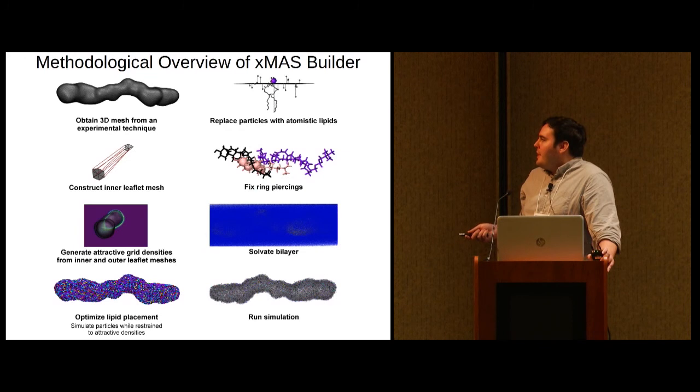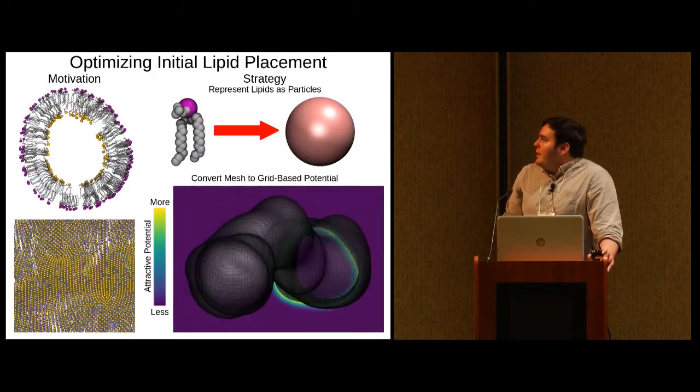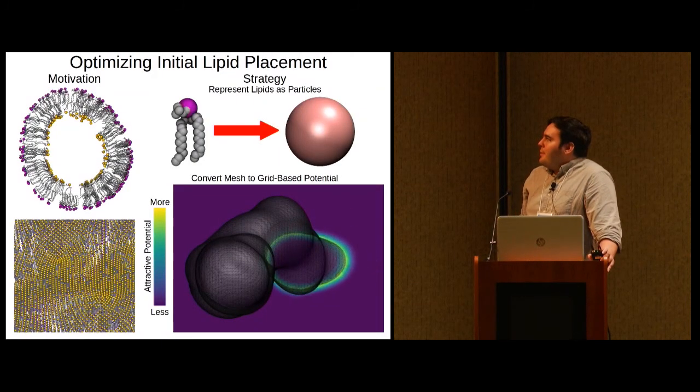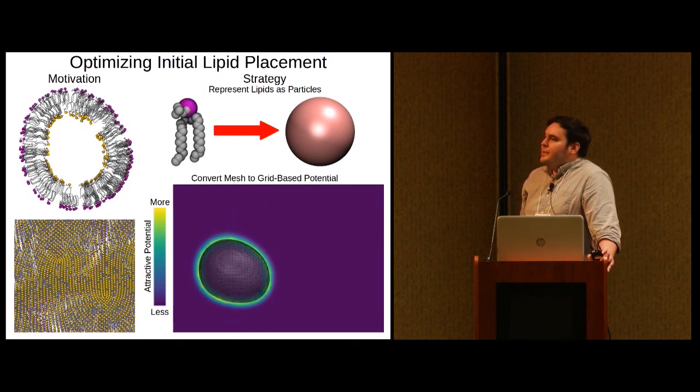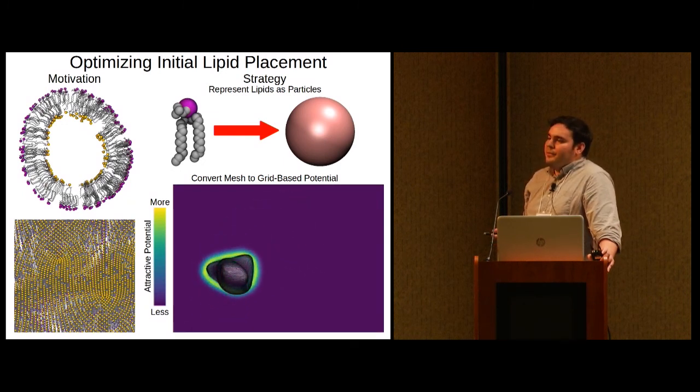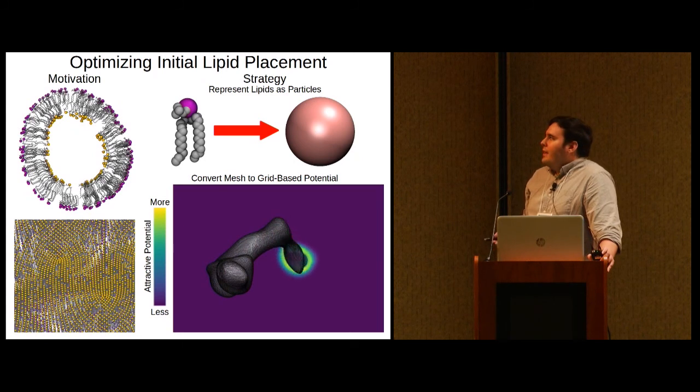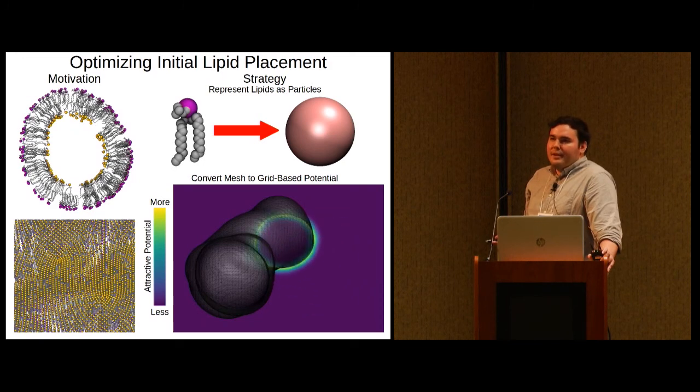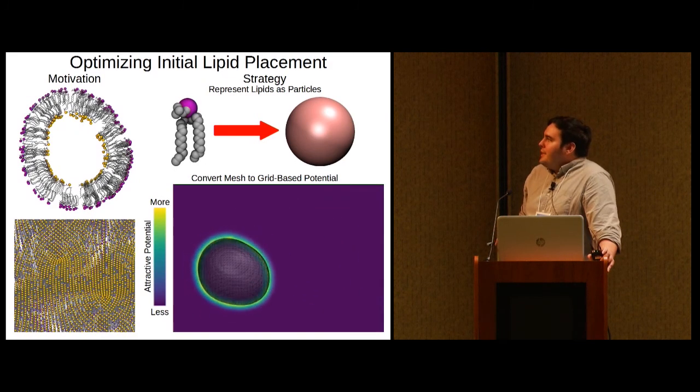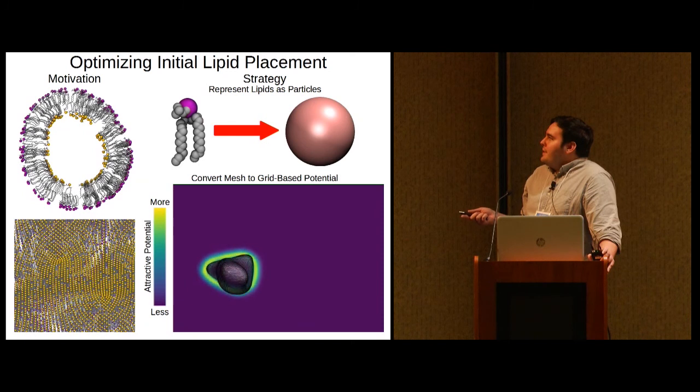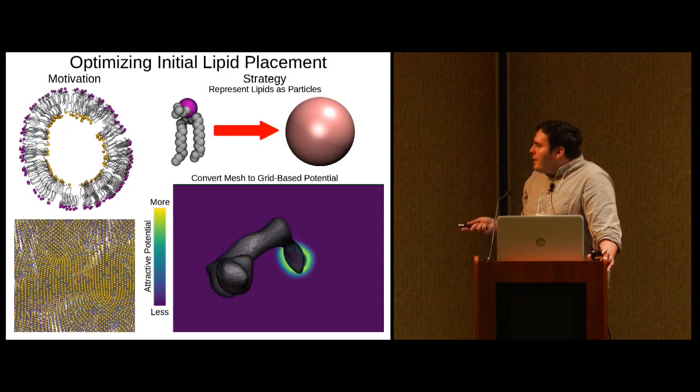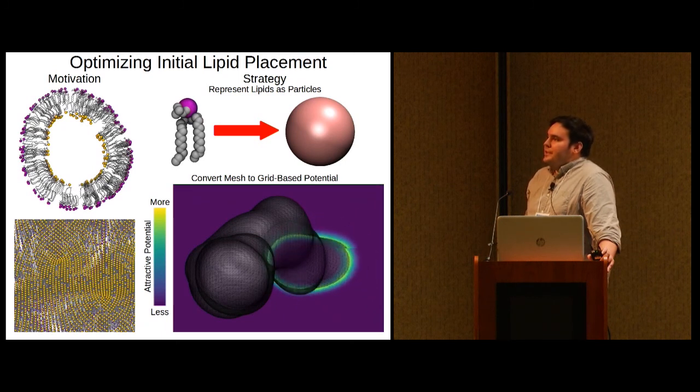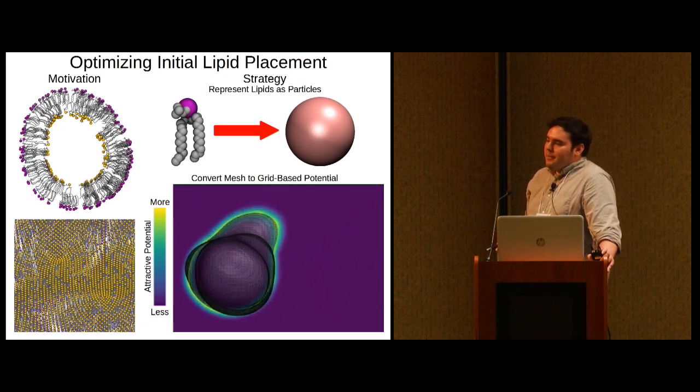So the first step I'll be talking about is optimization of lipid placement. In that preliminary model of the Terasaki ramp, lipids were placed using the vertices of the inner and outer leaflet meshes, which is the most straightforward way you can think of to place lipids. Unfortunately, when you do this, you end up with holes like this and patterns like this in your membrane because vertices on a mesh are not evenly distributed over the surface of a mesh.